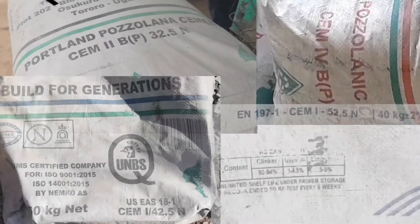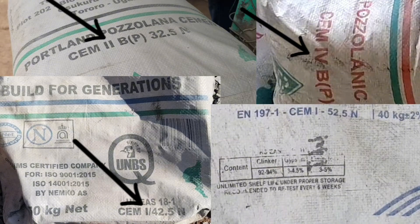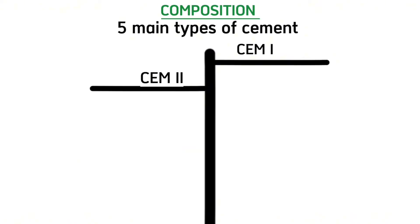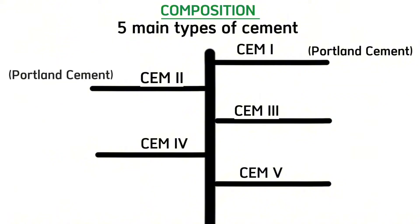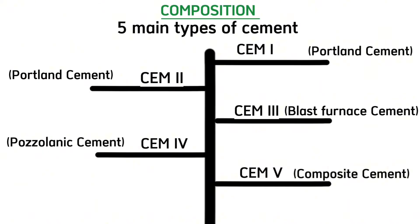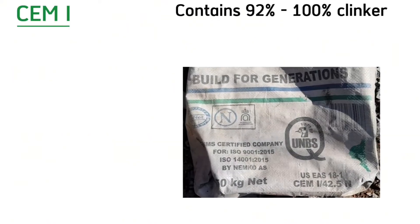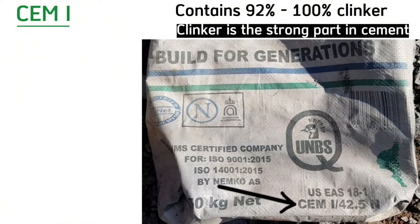Under the composition of cement, there are five main types: Chem 1, Chem 2, Chem 3, Chem 4, and Chem 5. Chem 1 is a Portland cement, Chem 2 is also a Portland cement, Chem 3 is a blast furnace cement, Chem 4 is a pozzolanic cement, and Chem 5 is a composite cement. Chem 1 cement contains 92% to 100% clinker depending on the manufacturer, but the minimum amount of clinker in a Chem 1 type cement will be at least 92%.